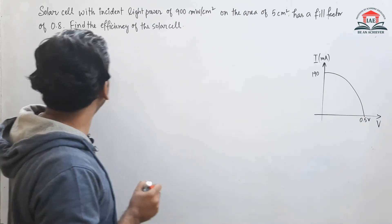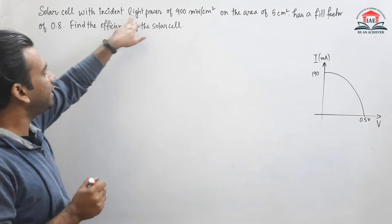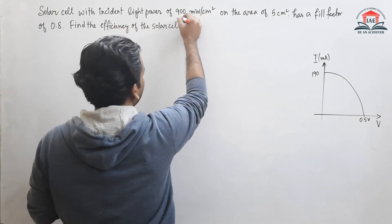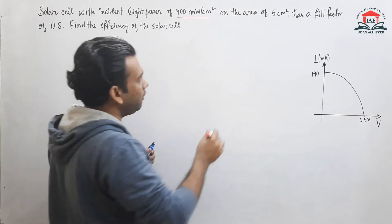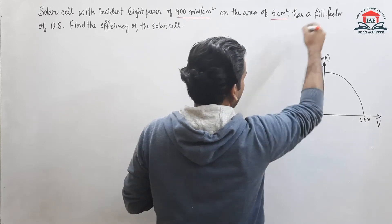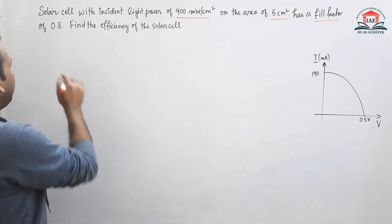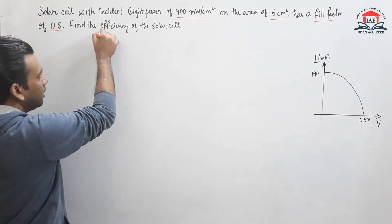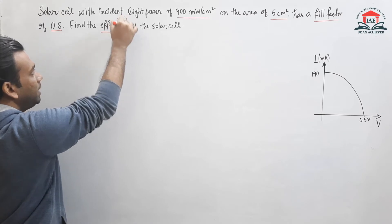In this question, a solar cell with incident light power given as 900 milliwatt per centimeter square on the area of 5 centimeter square and has a fill factor of 0.8. You have to find the efficiency, which is denoted by eta.